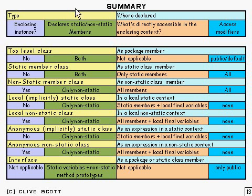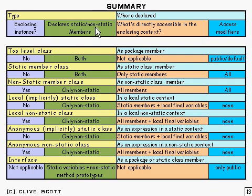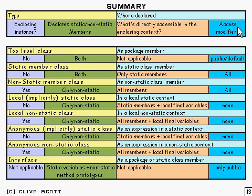Here's a summary of everything about nested classes. Here's the key. The yellow thing is the type that we're talking about. Where is it declared? Does it require an enclosing instance to be supplied or not? Can it declare static or non-static members? What can you directly access from the enclosing context? And what access modifiers are allowed?